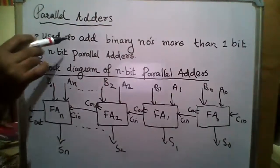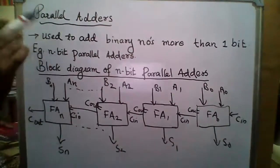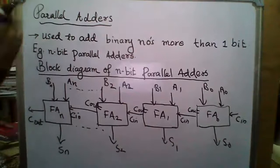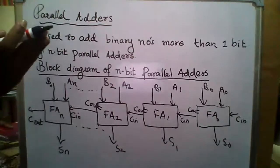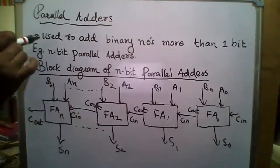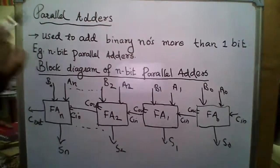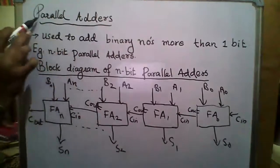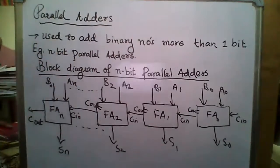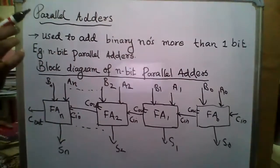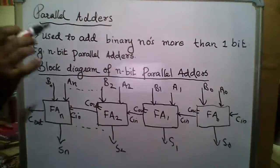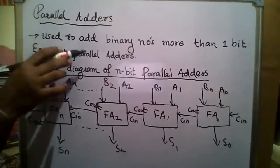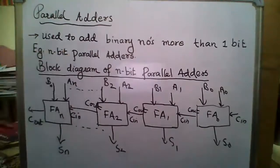Now let's go to Parallel Adders. Parallel Adders are used to add binary numbers having more than 1 bit. We will start with an N-bit Parallel Adder.